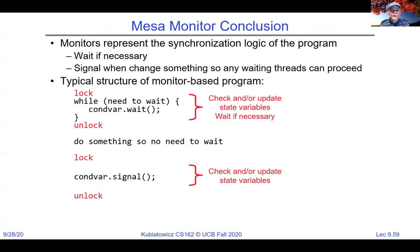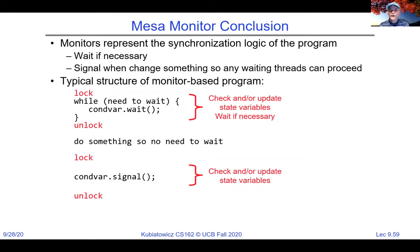The conclusion: remember the MESA monitor pattern — grab the lock, loop until conditions are right, unlock, do something, then exit by locking, changing conditions, signaling, and unlocking. Synchronization is the hardest topic we cover in this class, and especially the first time you see these conditions it takes a while to figure out what to look for.